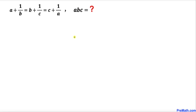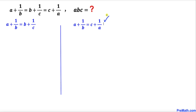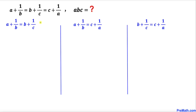Let's get started with the solution. First, let's focus on a plus 1 over b equals b plus 1 over c. Then let's compare the first and last equations, and finally let's compare the last two equations.